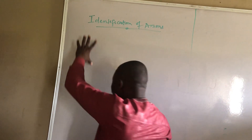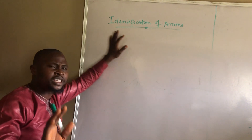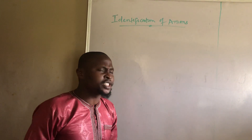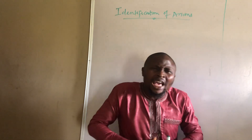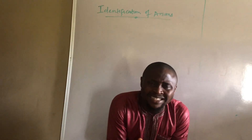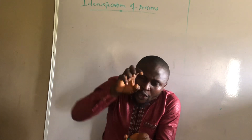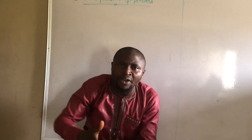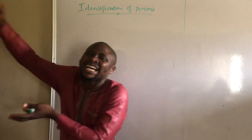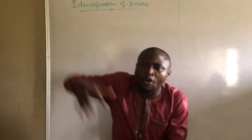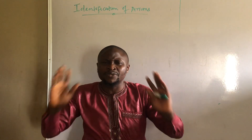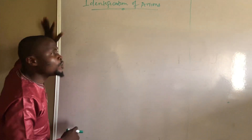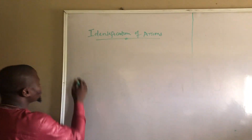Today we are going to look at identification of anions, and we have certain objectives to meet. The objective is to discuss how we identify anions from heating the salts — the unknown substance that contains the anion. When we heat it, there will be an evolution or effervescence of a certain gas. How do we use the gas that evolved to detect or describe the anion present? That is the objective for today's class.